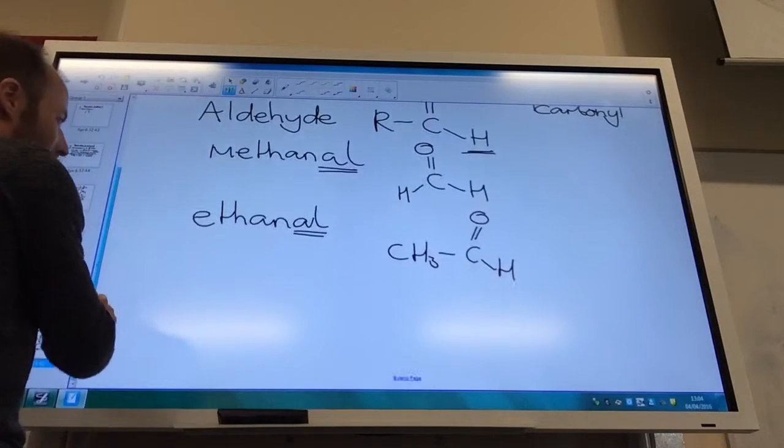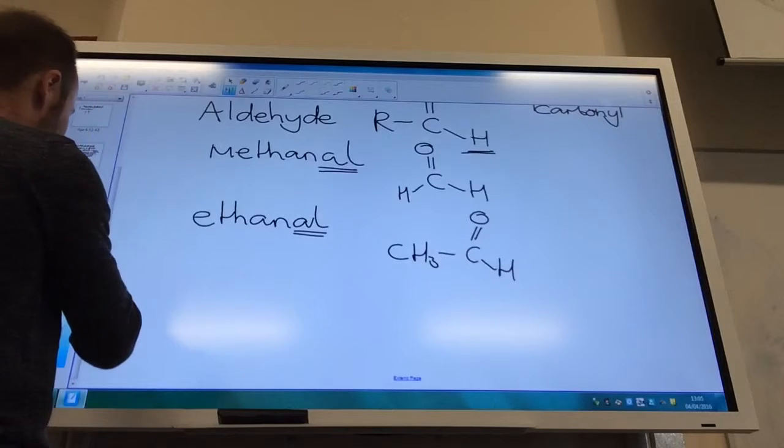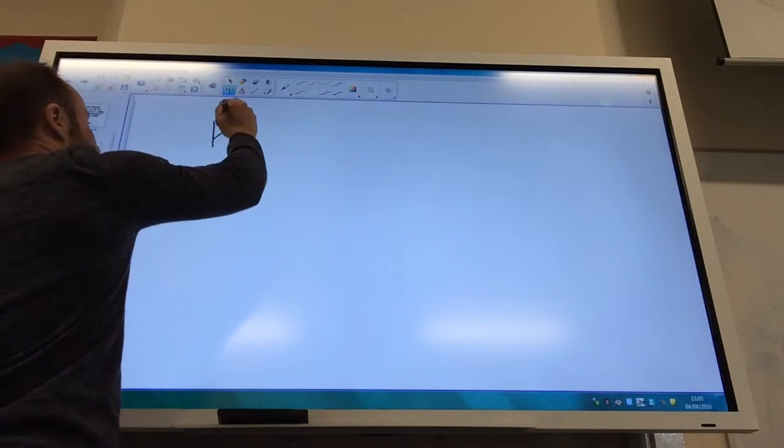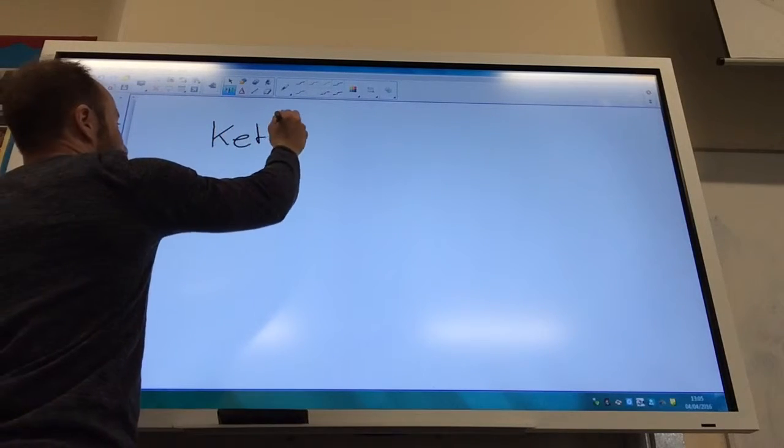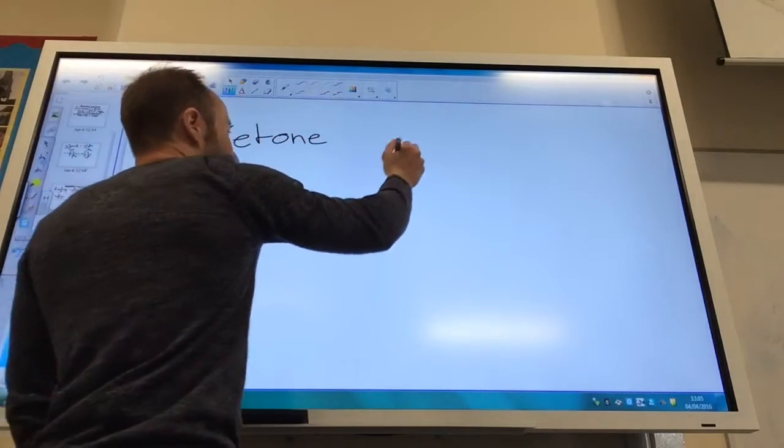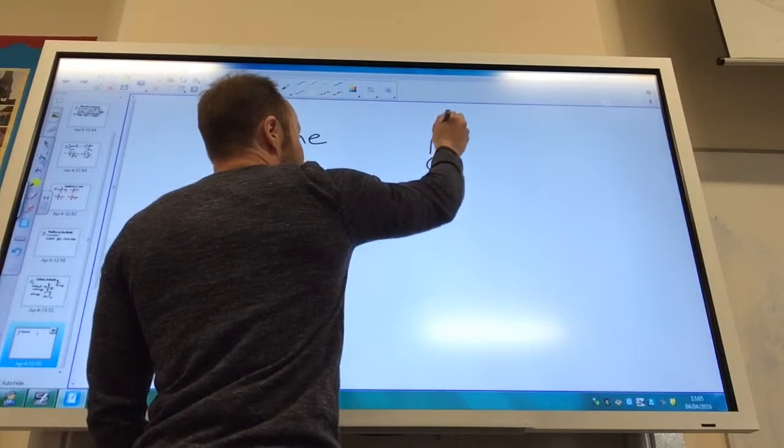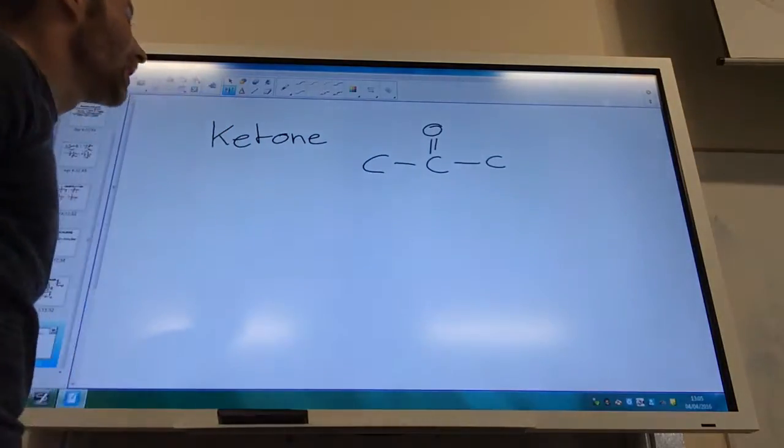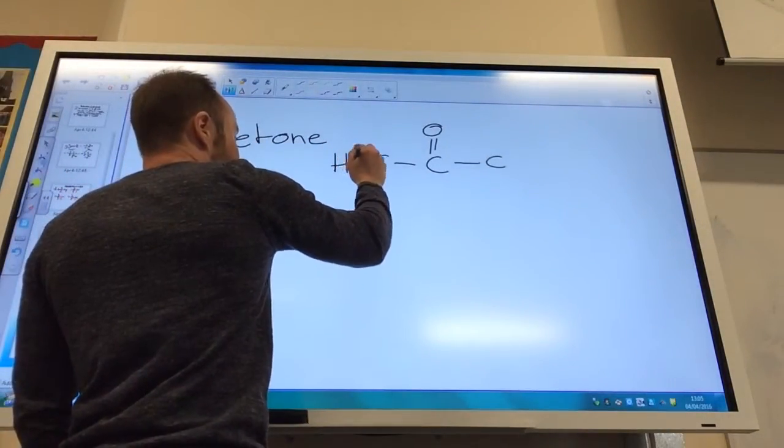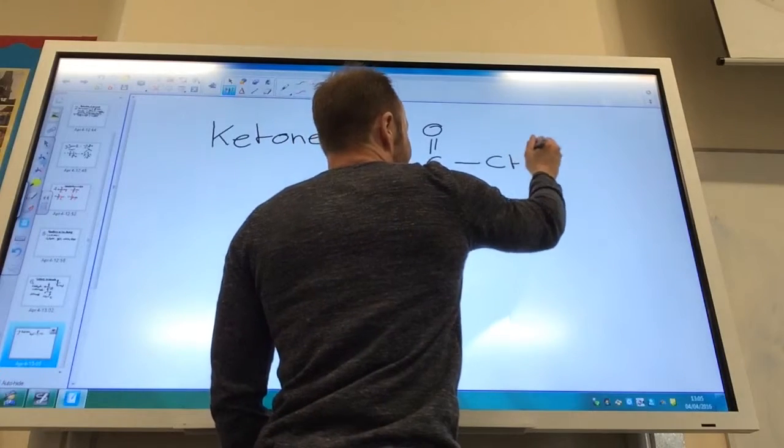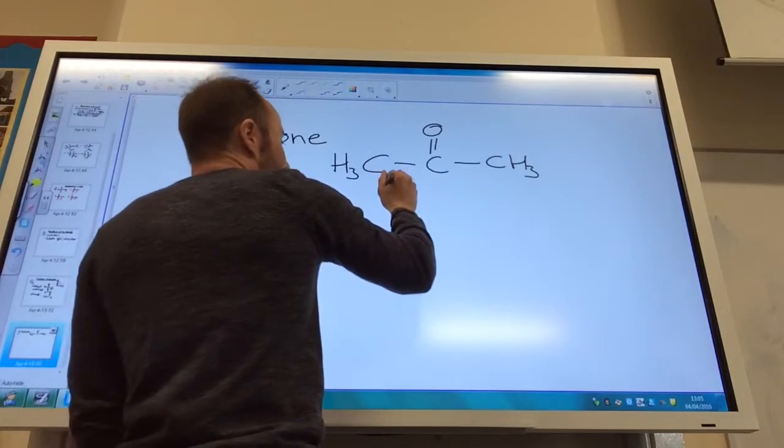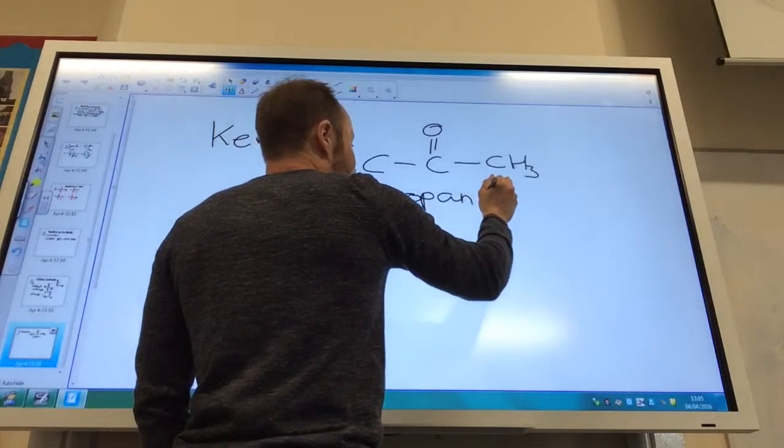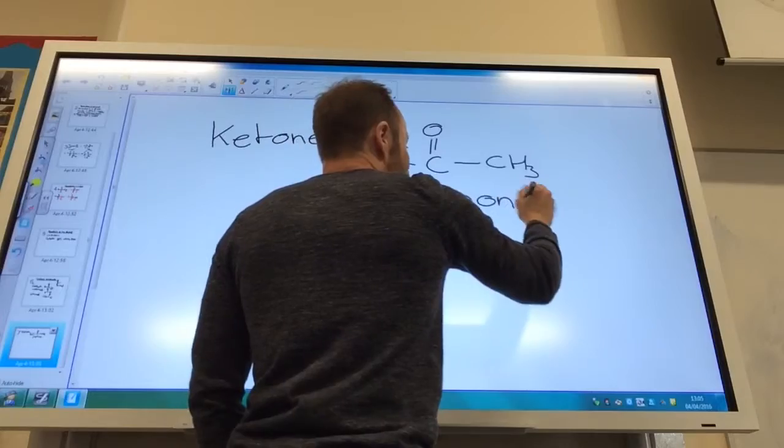The second carbonyl compound that you need to know are ketones. A ketone contains the carbonyl group, but on either side contains a carbon atom. The simplest ketone actually contains three carbon atoms, and it's going to start with prop. Hopefully you can guess how it's going to end - it's going to be propanone.